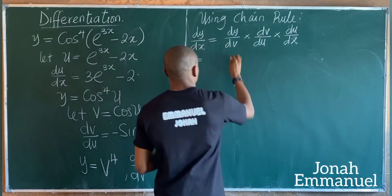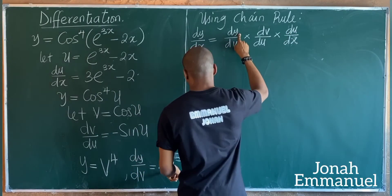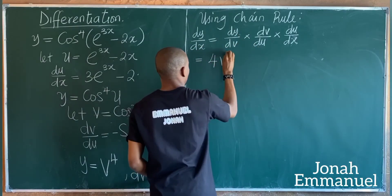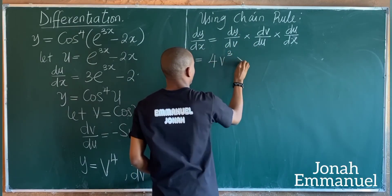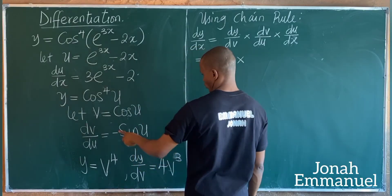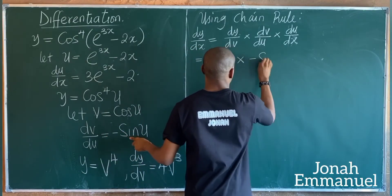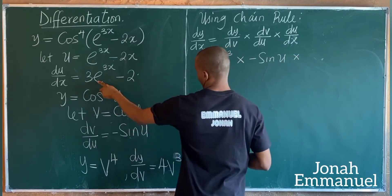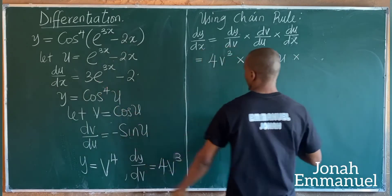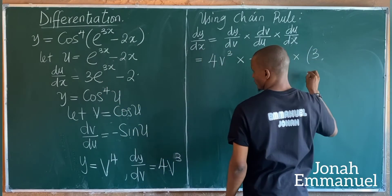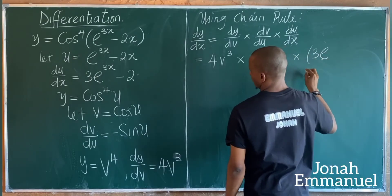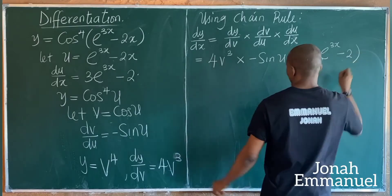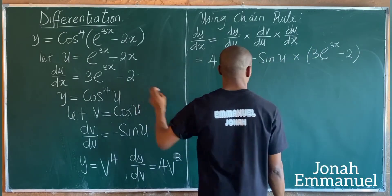Substituting values: dy/dv is 4v cubed, times dv/du which is minus sin u, times du/dx which is 3 exponential 3x minus 2.